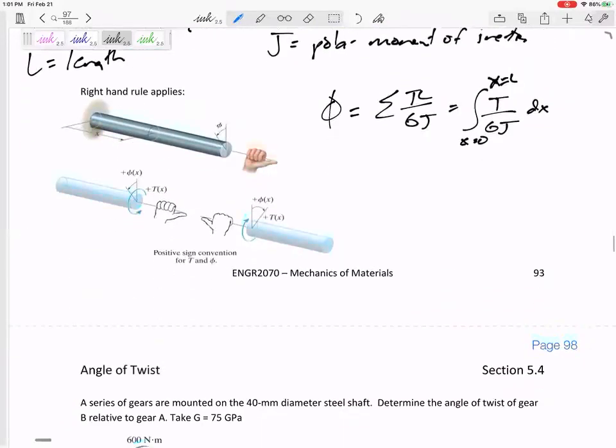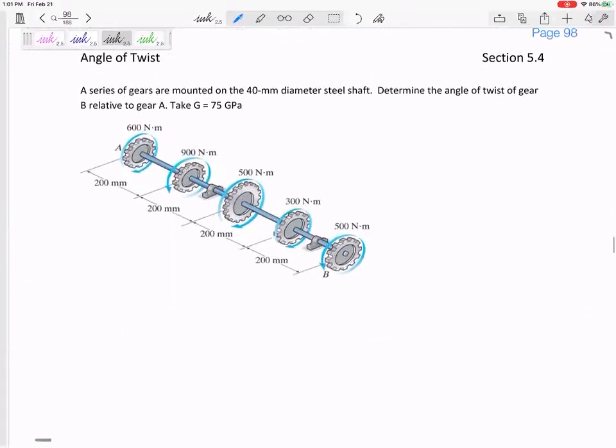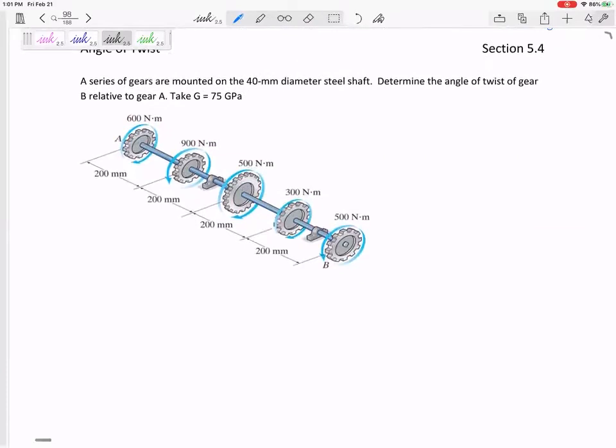Let's do some examples. We've got these series of gears. Determine the angle of twist of gear B relative to gear A. So from here all the way to there, what is the angle of twist? Got to be really careful with my positives and negatives because maybe it twists this way, but then twists back that way, twists back this way, that way.